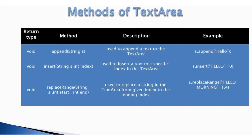After constructors, let's see the methods of TextArea. The first method is append, with one String parameter, used to append text to the TextArea. The second method is insert, with two parameters — a String and an integer — which inserts text at a specific index in the TextArea.